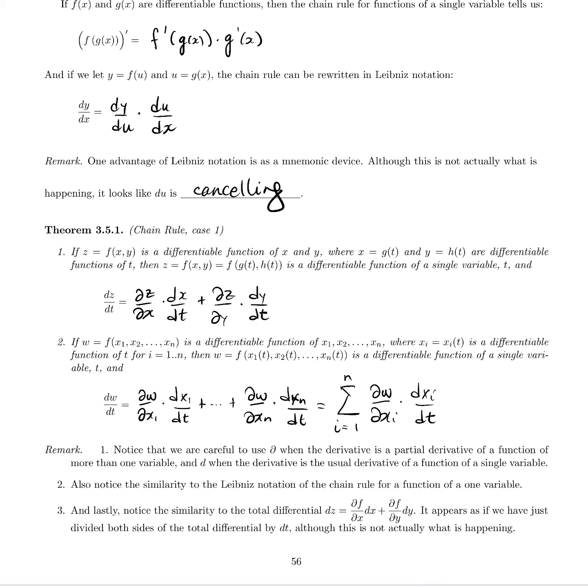A couple things to point out: first, notice that we're very careful to use del's and d's where appropriate. We use del when the function is a multivariable function, when the relationship is a partial derivative of a function with respect to its variable, which is sometimes called the intermediate variable, since the final variable is actually t here.